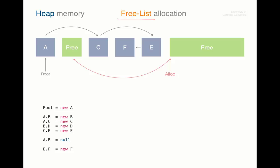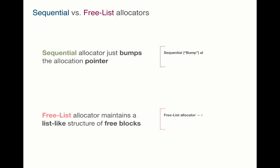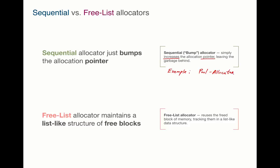The free list allocation is usually slower than the bump allocator due to searching overhead, however, there are some optimizations which allow speeding up the search. So to state it in one sentence, the sequential allocator just increases the allocation pointer, leaving the garbage behind. A pool allocator is an example of such sequential allocation. And the free list allocator have to track the free blocks in a list-like data structure and reuse them.